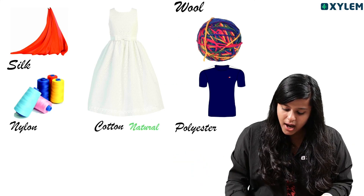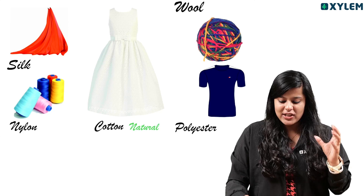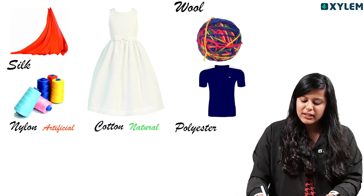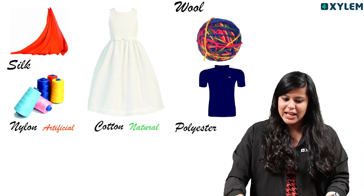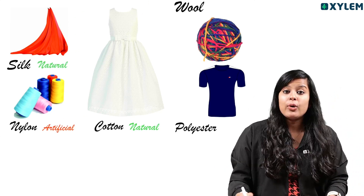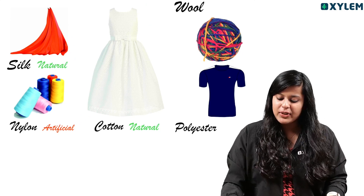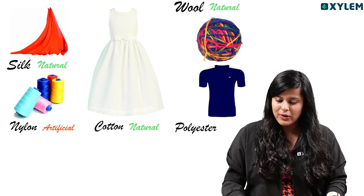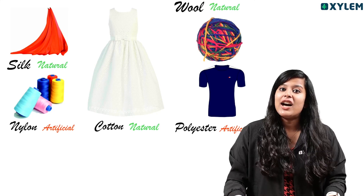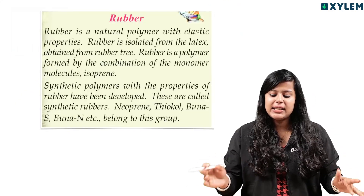Cotton — natural. Nylon — artificial. Silk — natural. Wool — natural. Polyester — artificial. You can classify them separately into natural and artificial fibers.